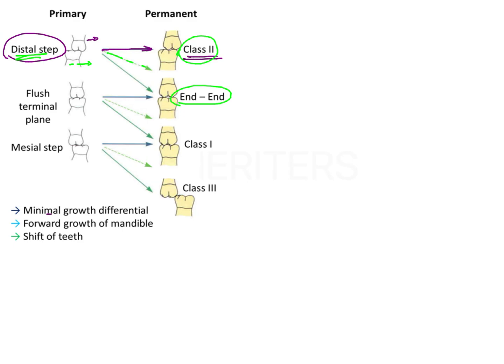If the relationship was a flush terminal plane — the most common type — with minimal growth the molars remain in an end-on relationship. However, if there is mesial movement of the mandibular molars, it results in a Class 1 type of relationship.